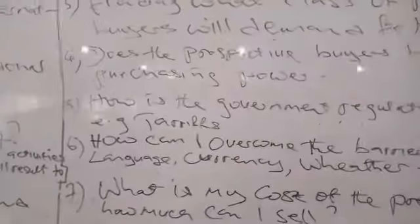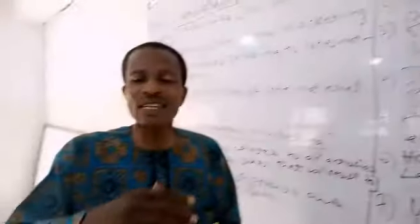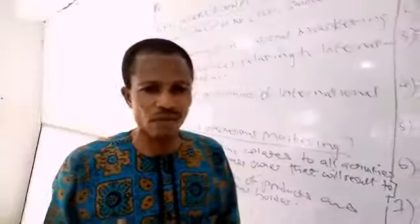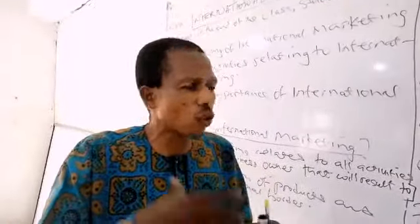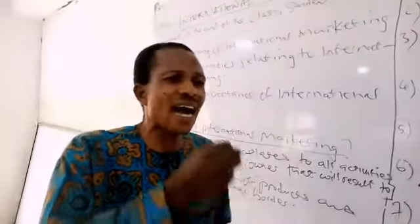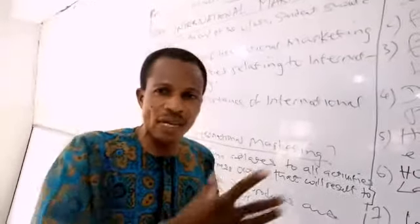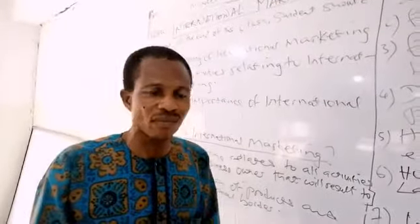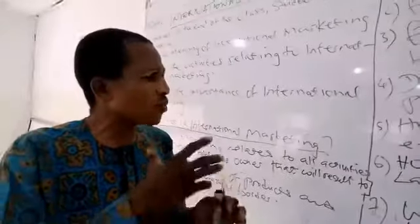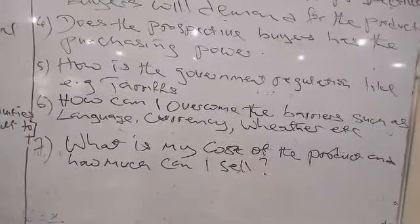Number five, how is the government regulation like in the countries where you are selling the products? Will the government impose high tariffs on the product you are selling to them? When you put all this into consideration, you will be able to decide whether to go ahead with the production of those commodities or not.